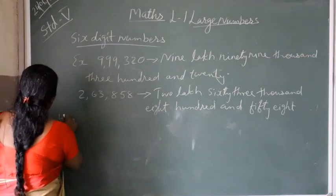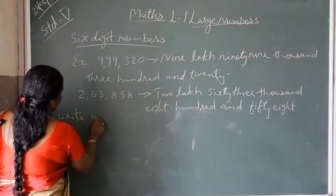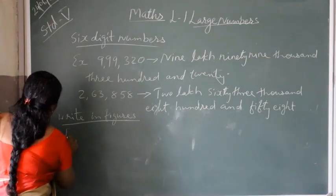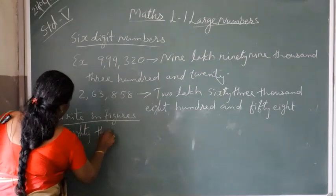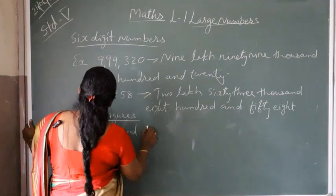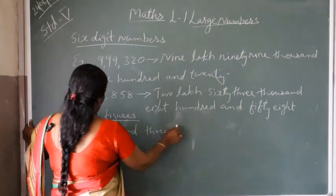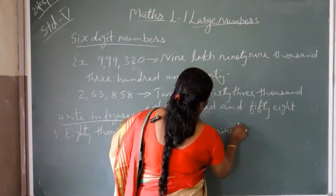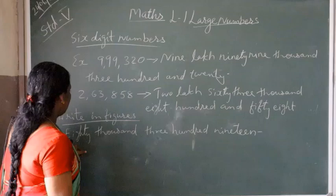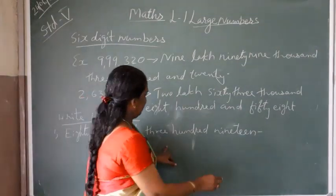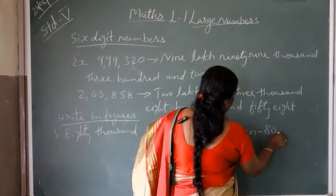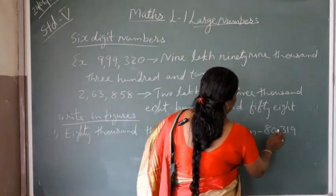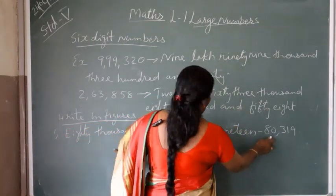Next, write in figures. First question: 80,319. Eighty thousand means 8 in the ten-thousands place and 0, then 319. It is a five-digit number with places: ones, tens, hundreds, thousands, and ten-thousands. So 80,319.